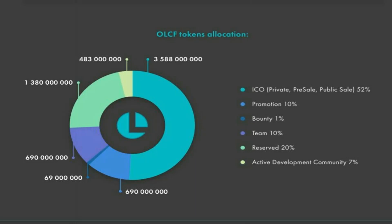Promotion is 10%, bounty is 1%, team has 10% which will be issued under lock, reserve is 20%, and active development community gets 7%. If you want to be part of the All Portal ICO, I urge you to join the Telegram group via the links provided in this video.